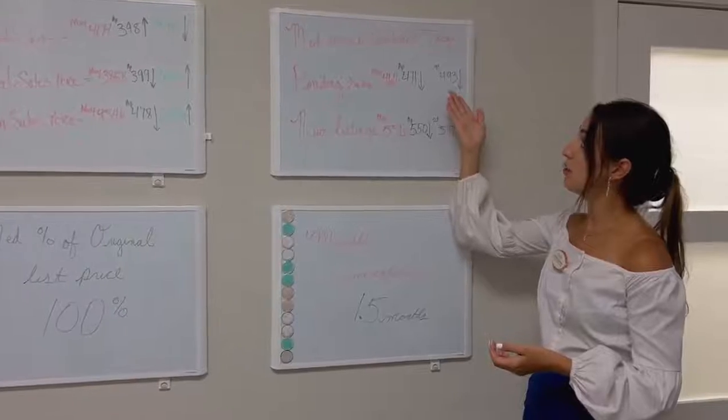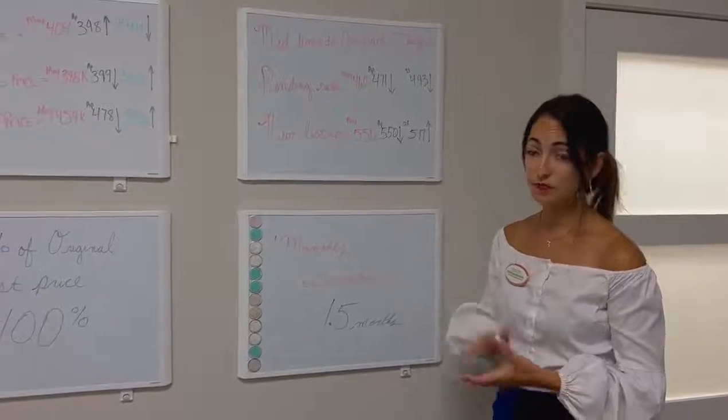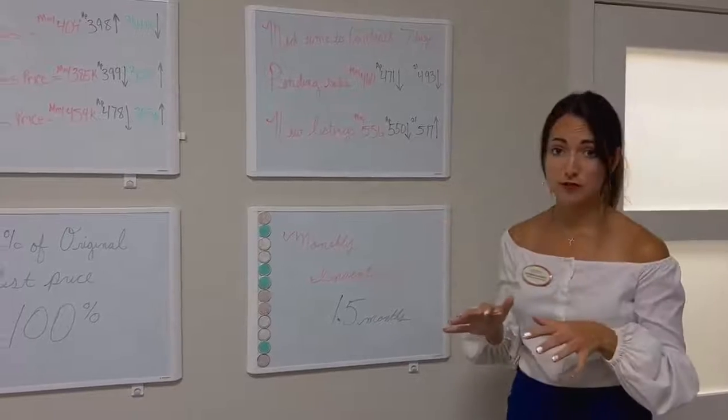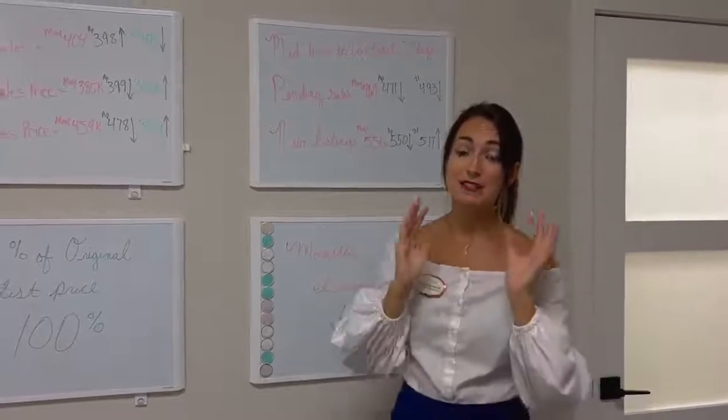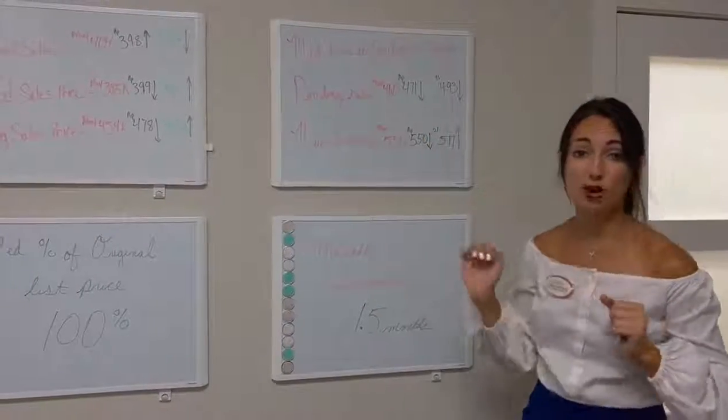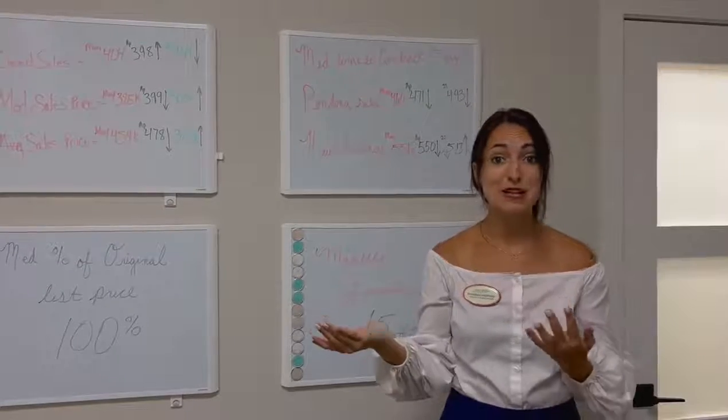Moving on, then we go back to this time last year was 493 deals. So we are down on both of those. This time last year, 493. This time last month, 473. And we're sitting at 460 for the month of May. Again, a little bit of a shift. That's to be expected.